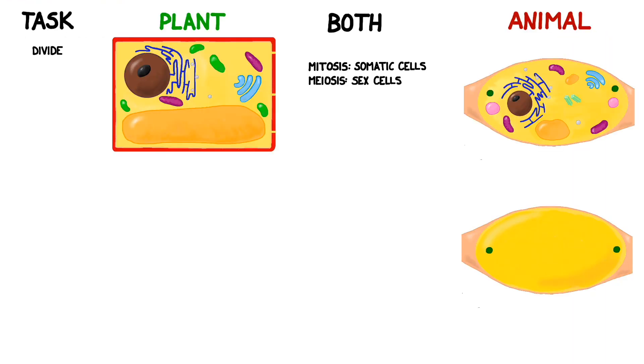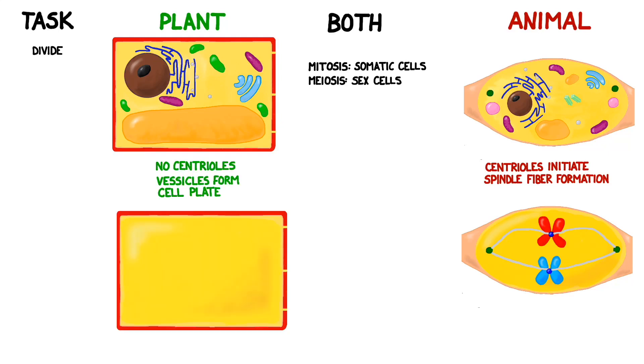Both plant and animal cells use mitosis for somatic cells and meiosis for sex cells. Each cell type has specializations that assist with the division process. Animal cells have centrioles that initiate spindle fiber formation. Plants don't have centrioles, but they do have vesicles that deliver cell wall components along the cell plate. This separates the newly forming cells.